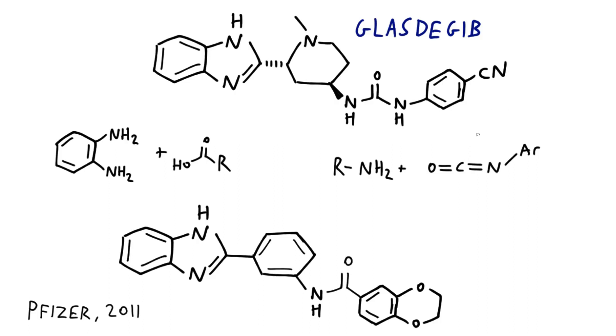Glasdegib is a drug developed by Pfizer for the treatment of acute myeloid leukemia. I'm going to talk about the 2011 route and then a slightly improved route that came a few years later.